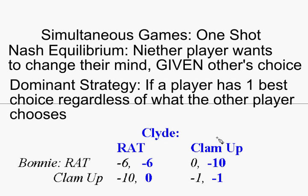We also assume this is a one-shot game, meaning Bonnie and Clyde don't know each other — they've never met and will never see each other again after this game is played. We assume that to simplify things and remove the possibility that Bonnie might be embarrassed by her choice, feel guilty, or worry that Clyde will come after her. So in this one-shot game, all Bonnie cares about is what Bonnie gets, and all Clyde cares about is what Clyde gets.